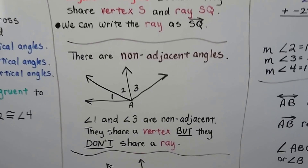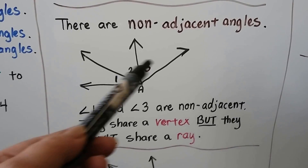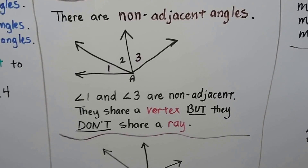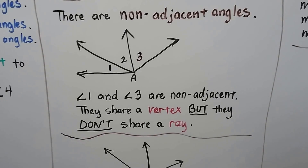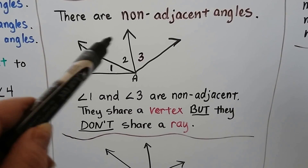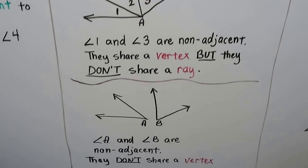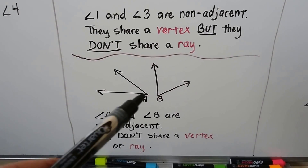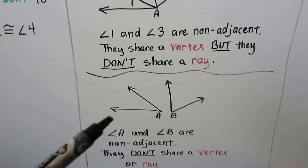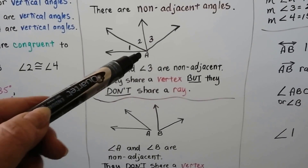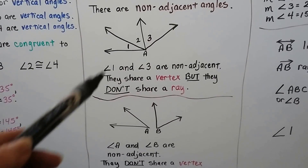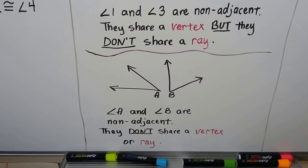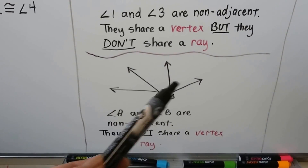There are also non-adjacent angles. Here we've got three angles in this diagram. Angle one and angle three are non-adjacent — they share vertex A, but they don't share a ray because angle two is separating them. Angle A and angle B are non-adjacent because they don't share a vertex or a ray. So angles can be non-adjacent even if they share a vertex, as long as they're not sharing a ray.